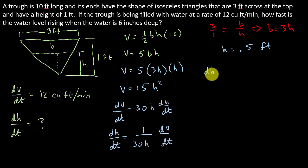And so I've got dh/dt = 1 over 30 times 0.5 times dV/dt, which is 12. And so I get dh/dt, and then you punch that into your calculator or whatever, and that's going to be 4/5 feet per minute.